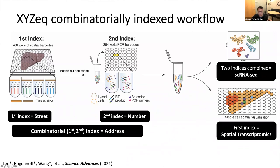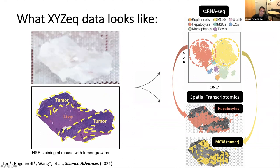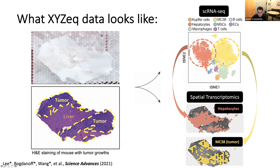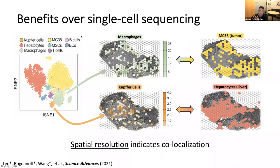The data we get out is bona fide single cell sequencing data, analyzable the same way as any other single cell dataset, but we can also now assign each cell to a spatial location limited by the spatial resolution of the physical wells. Here's what the data looks like: in a mouse tumor model, we inject MC38 tumor into a mouse liver. We take a slice for XYZ and a neighboring slice for H&E staining — the light stain is liver, the dark stain is tumor. When we perform XYZ, we get single cell sequencing data with each dot colored by cell type, and we can also map these cells back in space.